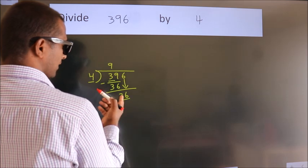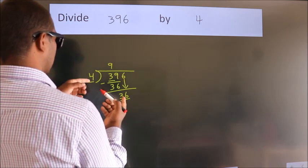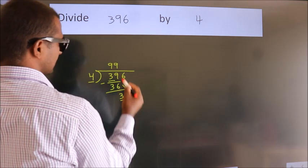So 36. When do we get 36? In 4 table. 4 nines 36.